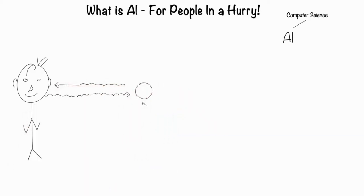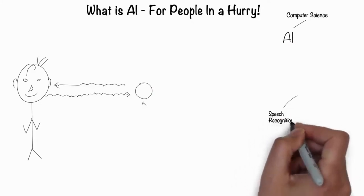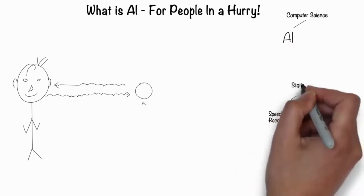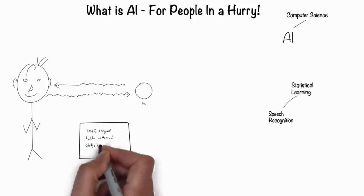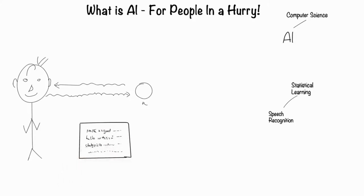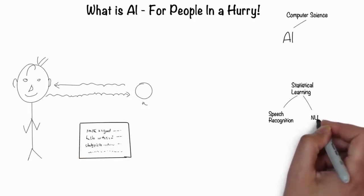Humans can speak and listen to communicate through language. This is the field of speech recognition. Much of speech recognition is statistically based, hence it's called statistical learning. Humans can write and read text in a language. This is the field of NLP, or natural language processing.